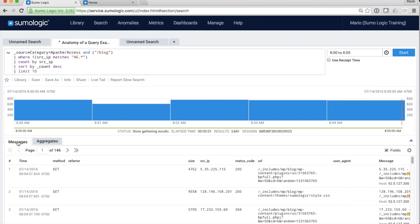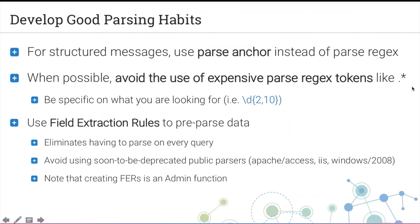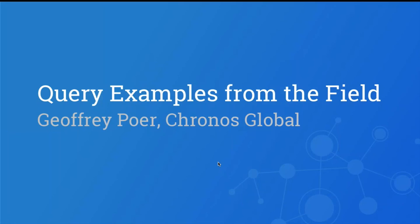Field extraction rules eliminate having to parse on every single query. Also note: you may have come across public parsers in our documentation — these are the old way of doing things and will soon be deprecated, so whenever possible switch to using a field extraction rule. Let me hand it over to Jeff, who will show us examples from the field — specifically queries that used to take a long time and with a few minor changes became much faster.